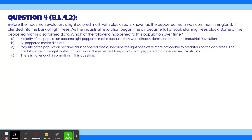Question 4. Before the Industrial Revolution, a light-colored moth with black spots, known as the peppered moth, was common in England. It blended into the bark of light trees. As the Industrial Revolution began, the air became full of soot, staining those trees black. Some of the peppered moths also turned dark. Which of the following happened to this population over time? A. Majority became light peppered moths, because they were already dominant. B. All peppered moths died out. C. Majority became dark peppered moths, because the light ones were more noticeable to predators on dark trees, and the predators ate more light moths than dark, drastically decreasing the light moth lifespan. D. There is not enough information.